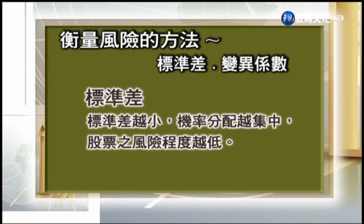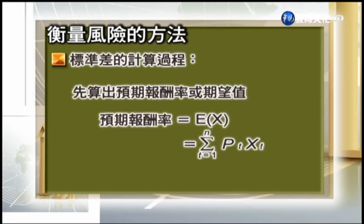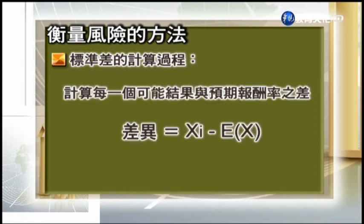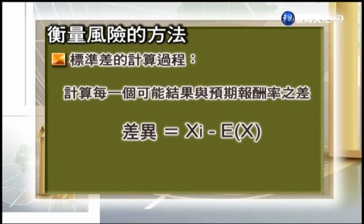什麼叫標準差呢？一般標準差越小，機率分配越集中，股票的風險程度就越低。計算過程：首先要先算出預期報酬率或期望值，也就是圖的中間那個，EX等於歷年發生的機率乘上各自產生的報酬X加總起來。第二步計算每一個可能結果與預期報酬率的差，把實際的報酬扣掉期望報酬。第三步計算每一組差異的平方。